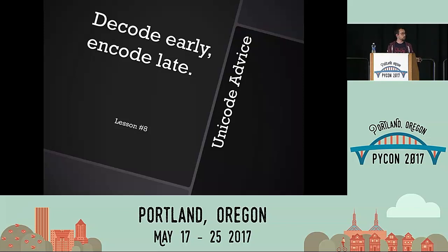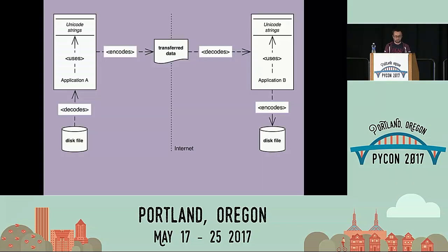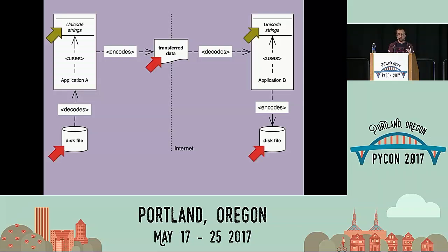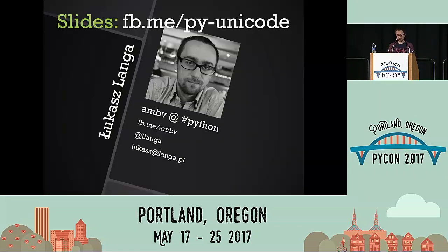If you're now thinking, what was that all about — here's a diagram. Inside your application you're in the world of Unicode strings, and you can transform text any way you like. But if you want to put it on disk or transfer it over the network, you have to encode it to bytes. The green things are Unicode strings; the red arrows represent binary data. That was the presentation. Thank you very much. My name is Lukasz Langa. The slides are available at the link shown.